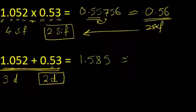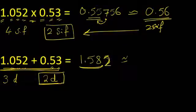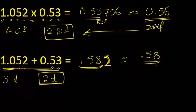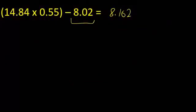The answer should follow the least number of decimals, which is two. The answer is 1.582, but I should include just two decimals, so I will stop here. The five rounds up to give 1.58 — two decimals, following the least number of decimals.